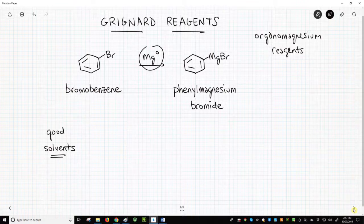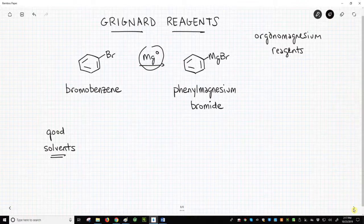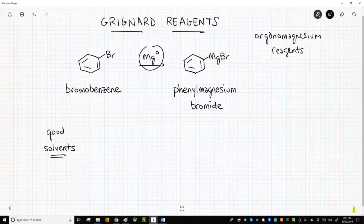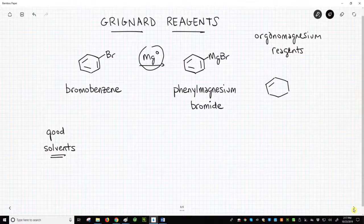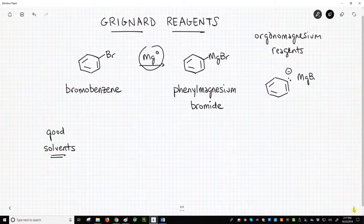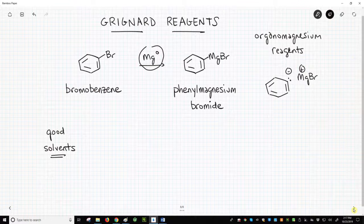As drawn, the product shows a covalent carbon-magnesium bond. If we were to use this molecule in a reaction, we would likely like to draw the product with an ionic carbon-magnesium bond. The magnesium is normally paired with the halide, bromide in this case, as a complex ion.